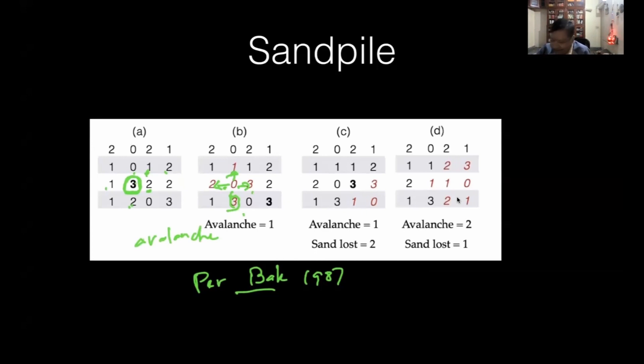This distribution of sand, one each to its neighbors, is one avalanche. But if any of these guys already have three, this will become four and create another avalanche. Right now the number of avalanches is one because the number of sand in the neighbors were two or less.